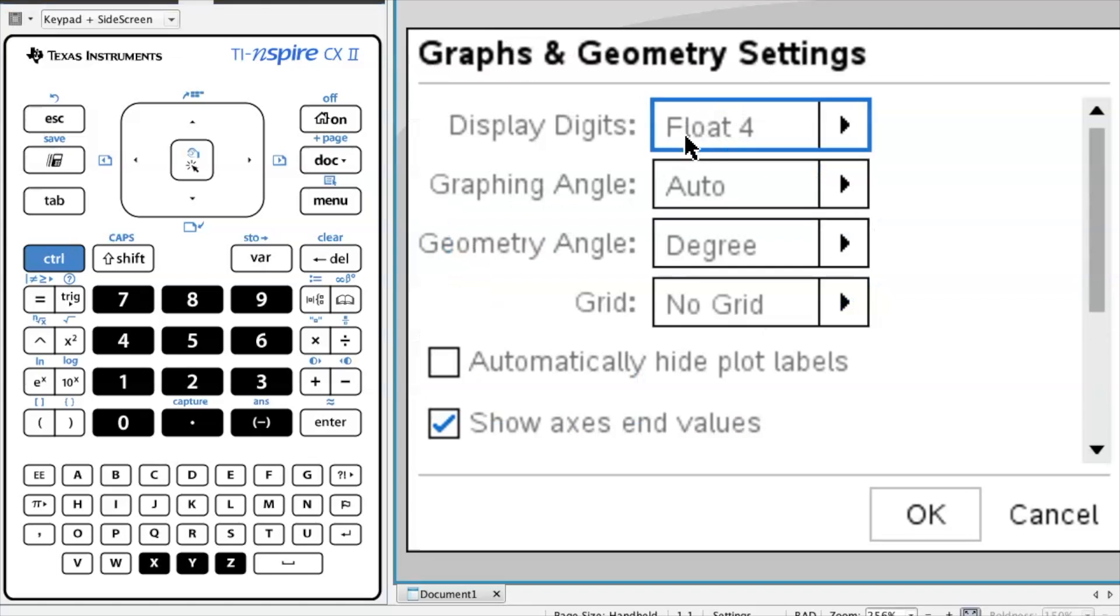And then here as you can see, this Display Digits will be what gives it to you. So here it says Float 4 because it displays 4 digits.